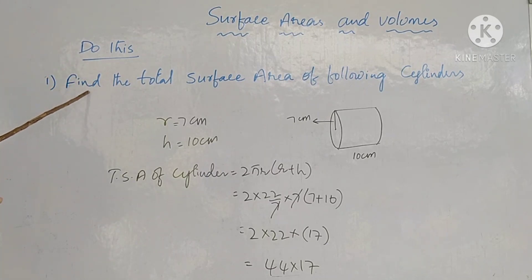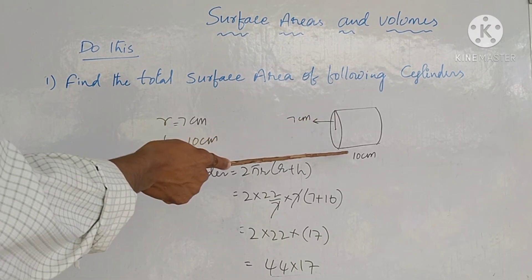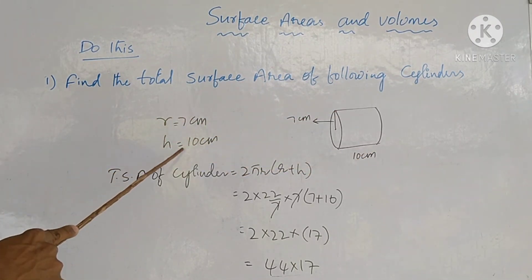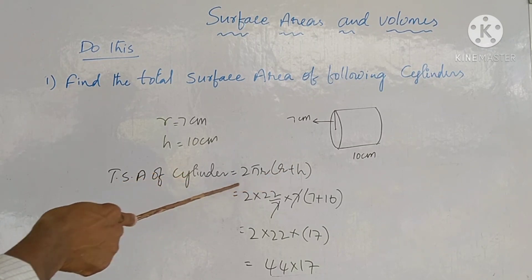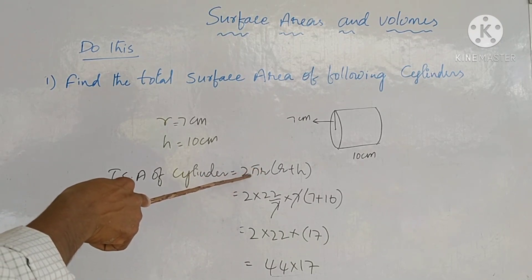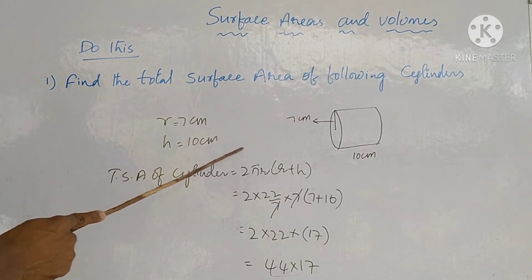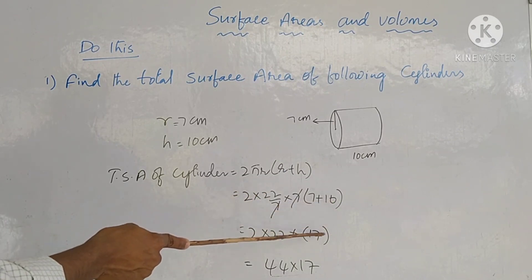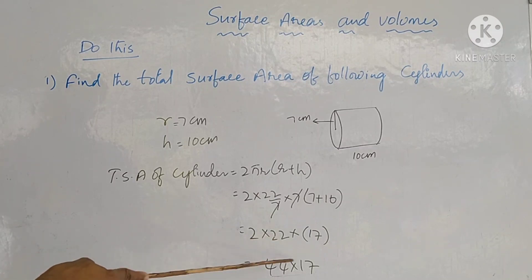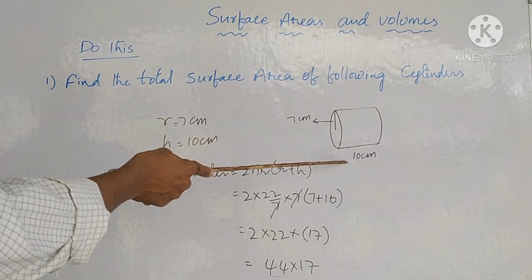Do This problem: Find the total surface area of the cylinder with radius = 7 cm and height = 10 cm. TSA = 2πr(r + h) = 2 × (22/7) × 7 × (7 + 10). The 7s cancel: = 2 × 22 × 17 = 44 × 17 = 748 cm². This is the total surface area for radius 7 cm and height 10 cm.